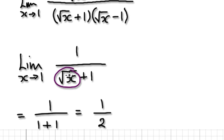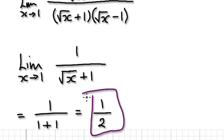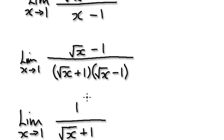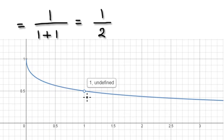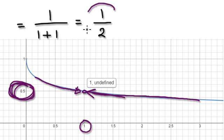As x approaches positive one, this here will be one, so it'd be one over one plus one, which is a half. Going back, if you plot the graph it will look like this — clearly at positive one it is undefined, but the limit approaches a half. From the right-hand side it will also approach positive a half. So the overall answer is a half.